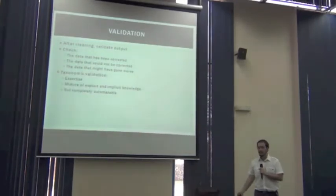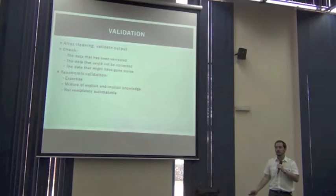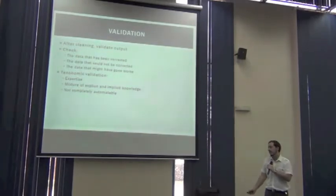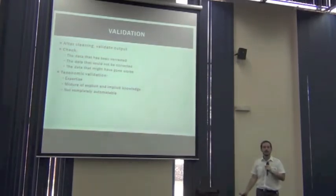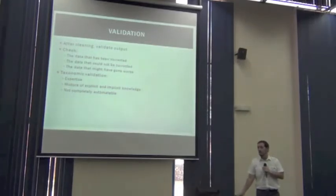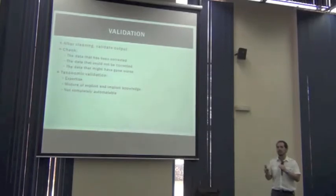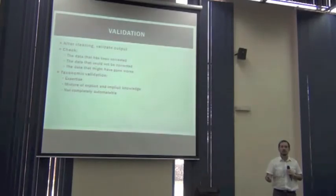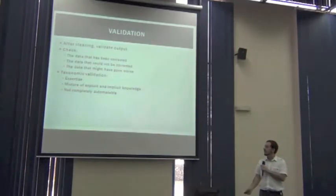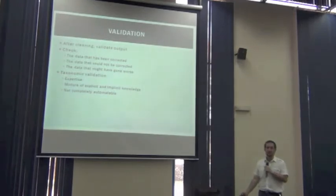In the case of taxonomy validation, the only way to do so is by using an expert, consulting an expert. Because he's the one, for the taxonomic group, that can effectively mix both the implicit and explicit knowledge, so they can see if the explicit knowledge was enough to clean this information. So this process is not completely automatic.